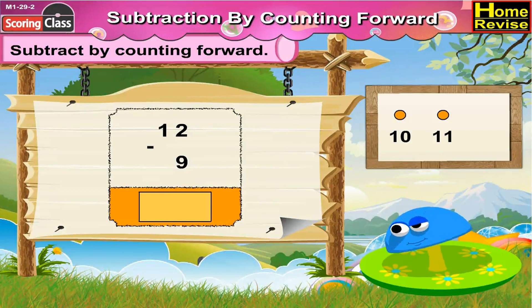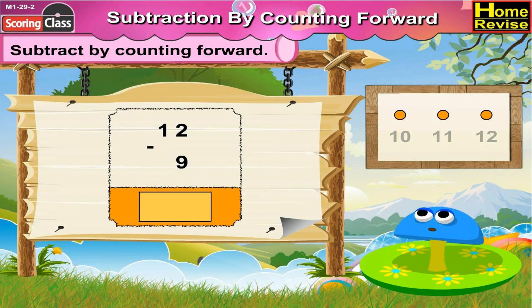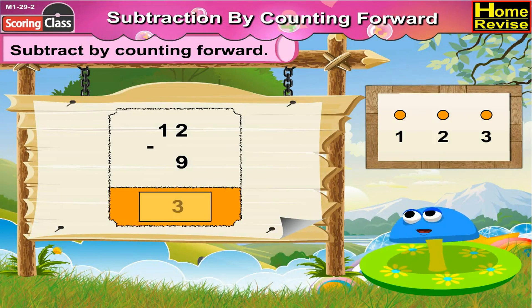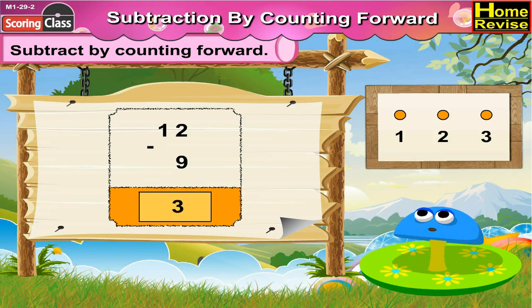12 minus 9. With counting forward it would be 10, 11, 12. That is 3 steps. So 12 minus 9 is 3.